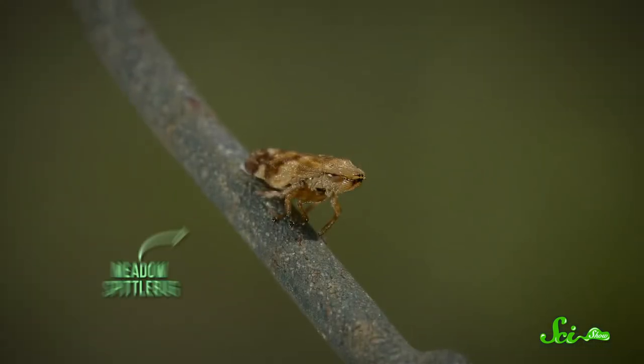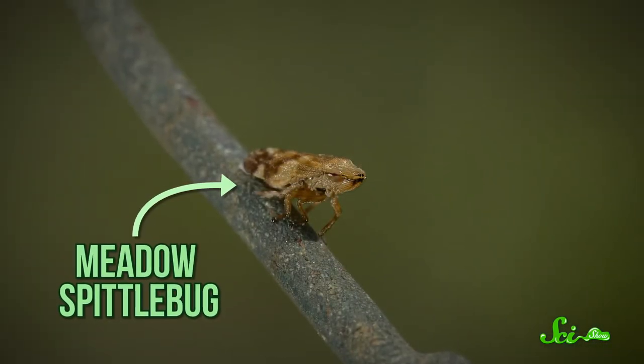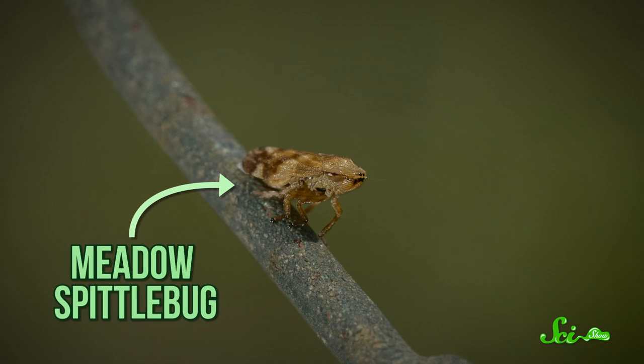Luckily, researchers are working on developing ways to protect farmland from Xylella fastidiosa. Like, by determining which of the 3,000 species of spittlebug are actually responsible for spreading it. Researchers reported that the meadow spittlebug was the main culprit in spreading the bacteria in Italian olive groves.